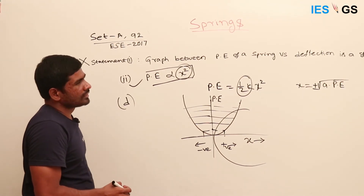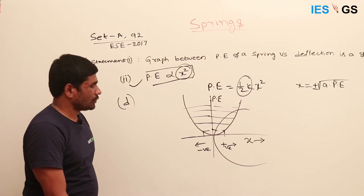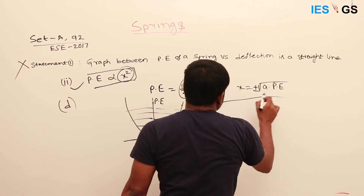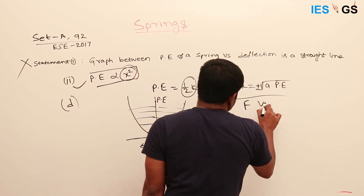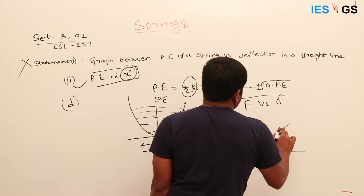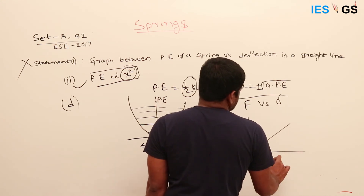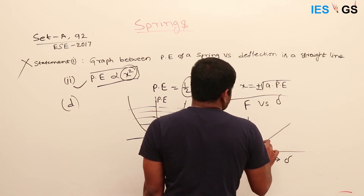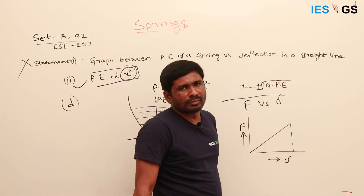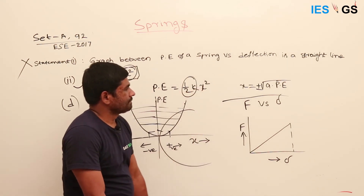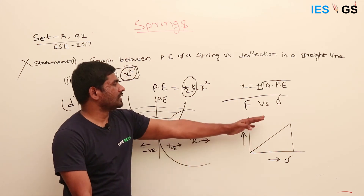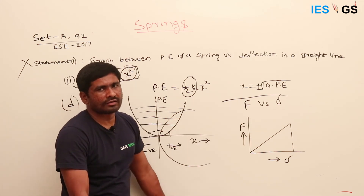Additionally, consider the graph between force and deflection. That graph is a straight line — force F is proportional to deflection X (Hooke's law). So a corrected Statement 1 could read: the graph between force and deflection of a spring is a straight line.